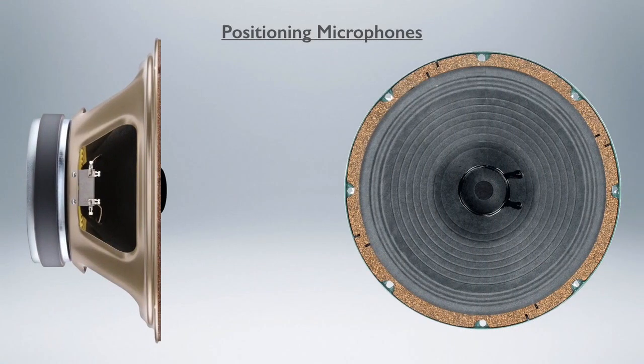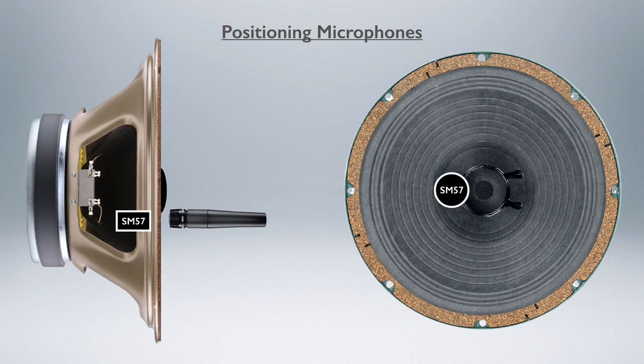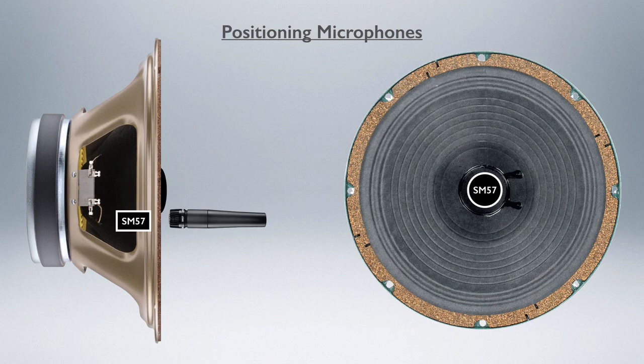So here's a side and front view of a speaker. If we were to take out our SM57, this is the place that I would place that mic—just off of the dust cover where the dust cover meets the cone. You could place it right in the middle, but that's the brightest part of the speaker and might be just a little bit too bright. My go-to place is right there where that dust cap hits the cone.